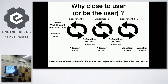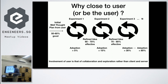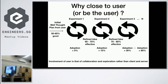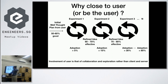Any plan that your user gives you about solving a particular problem is never perfect — every plan is imperfect. Your initial well-thought-out plan from users is probably only 50–60% good, and your first experiment's adoption score will be very bad. But you will learn something, and what you learn will improve your next experiment, and the next, and slowly your adoption rate will keep going up. This learning comes because the user is closely collaborating with you.